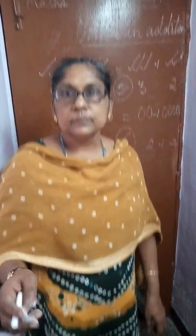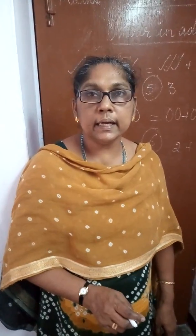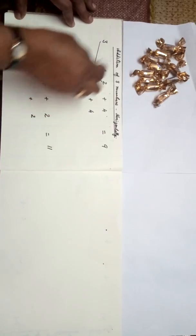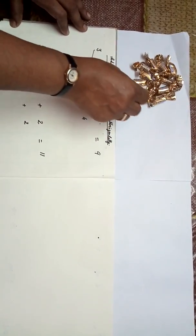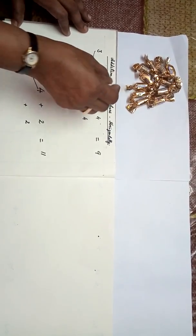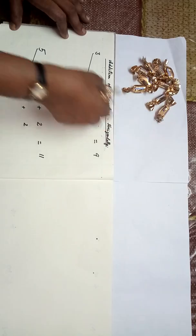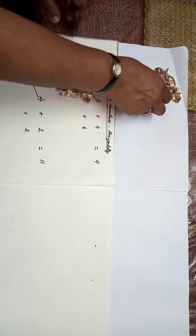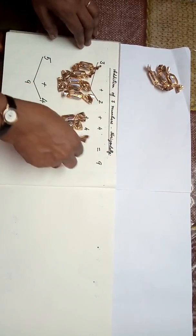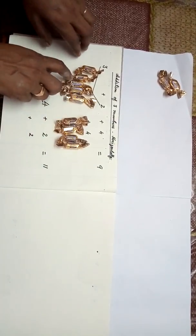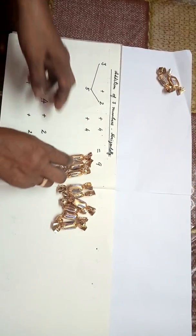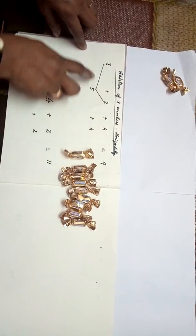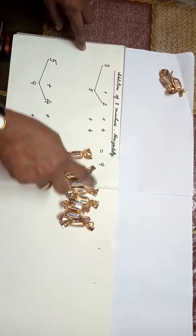Next we are going to learn vertical and horizontal addition. I am going to show you addition of 3 numbers horizontally. Children, do you like toffee? I know you like toffee — I am going to show you this with the help of toffees. First: 3 plus 2, so total is 5, plus 4. 5 plus 4 is equal to 9. So, 3 plus 2 plus 4 equals 9.